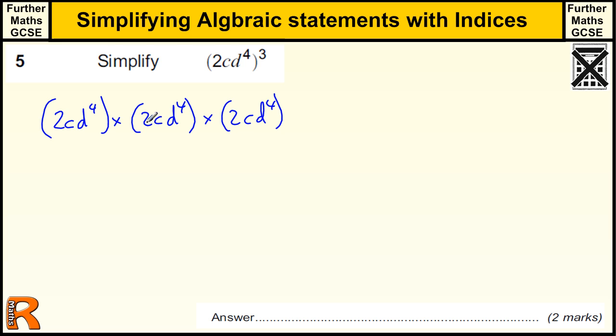So we've got the 2 times the 2 times the 2, which is 8, we've got a c times the c times the c, which is c cubed, and we've got d to the 4 times d to the 4 times d to the 4, which is d to the power of 12.